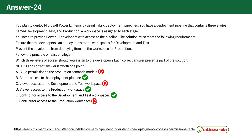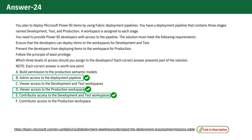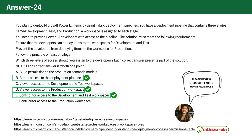So, by selecting options B, D, and E, we can ensure that developers have the necessary permissions to perform their tasks without having more access than required, particularly in the production environment. I hope this explanation was helpful. Please review the roles in workspaces in Microsoft Fabric before your exam. See you with another question in the next video.